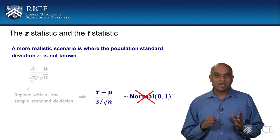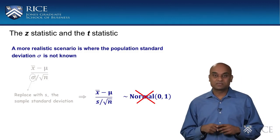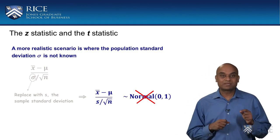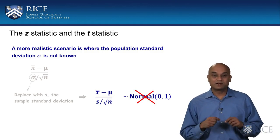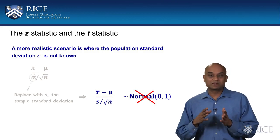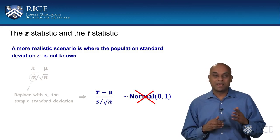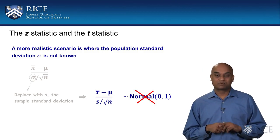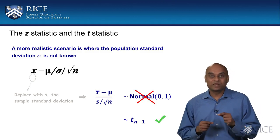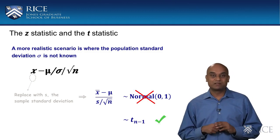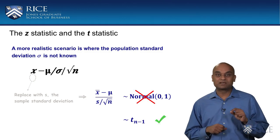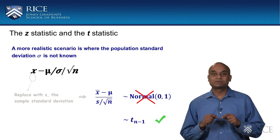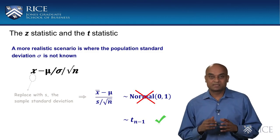However, the problem is that when we replace the population standard deviation in the expression for the Z-statistic with the sample standard deviation, the resultant expression — x-bar minus mu divided by s divided by the square root of n — no longer has a standard normal distribution. Rather, this new expression obtained by replacing the population standard deviation with the sample standard deviation has a t-distribution with n minus 1 degrees of freedom, where n is the sample size.